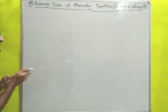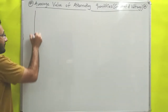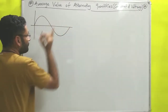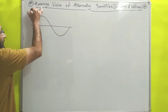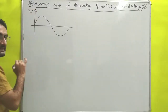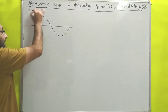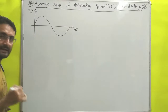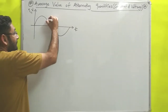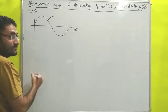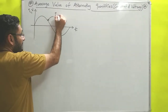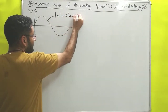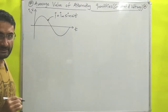Let me explain the same thing with the help of a waveform. I will draw a sinusoidal waveform — that is your I or V, known as alternating quantities — and on the x-axis I will consider time. We have already derived one equation for this waveform for current, which is I = Im sin(ωt), and we derived this equation in the previous video.